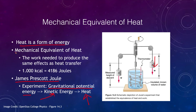When we look at this, it was also determined: what is the mechanical equivalent of heat? How can we relate heat energy to kinetic or potential energy? This is the work needed to produce the same effect as heat transfer. One kilocalorie equals 4186 joules. We'll use that conversion when we want to compare heat energy to an amount of work done.